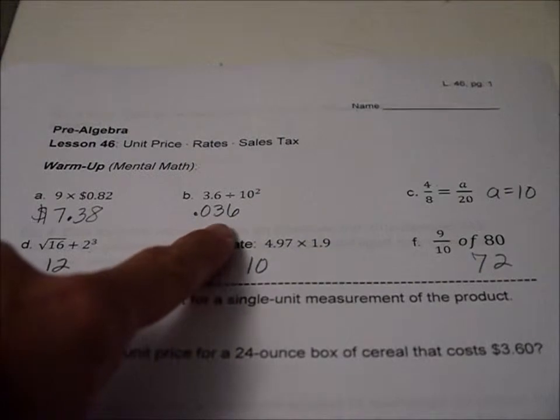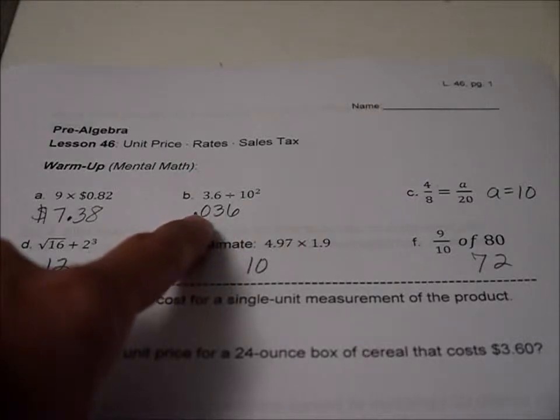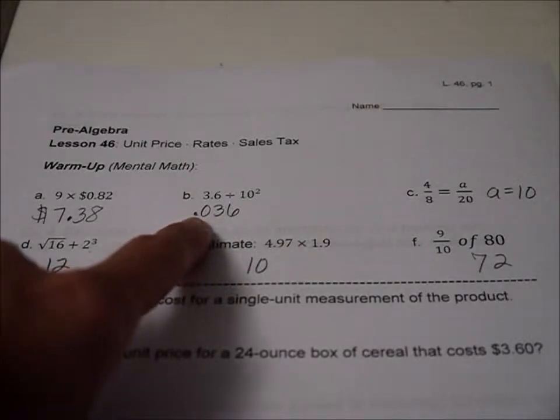3.6 divided by 10 squared, which is 100, that just means we move that decimal to the left twice, so that's how we ended up at .036.